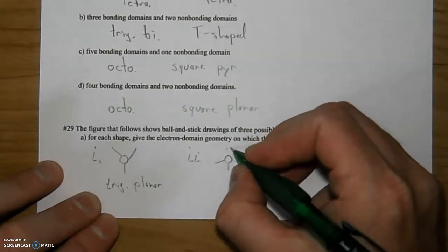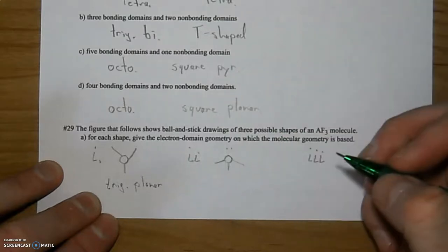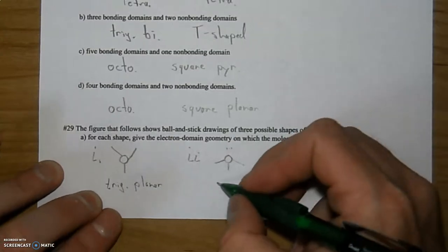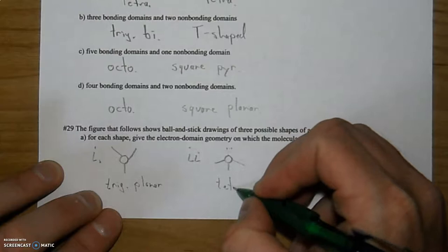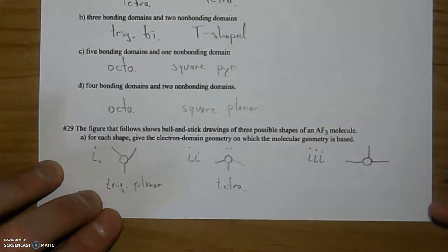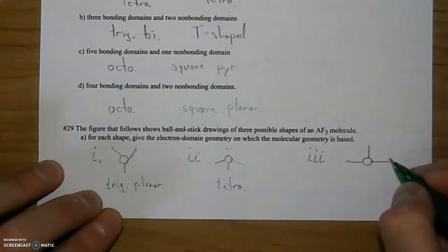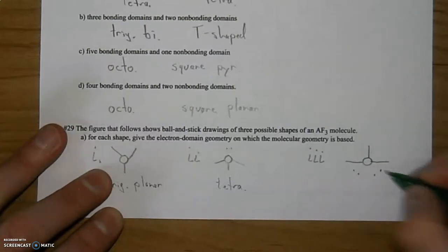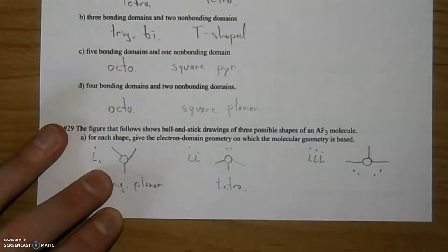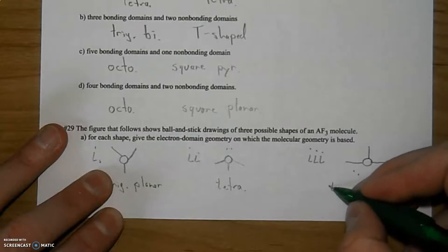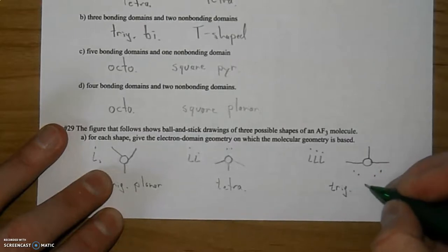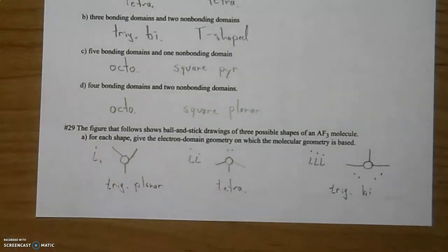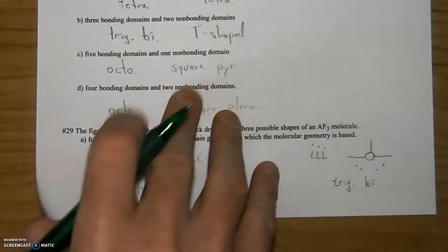This one still has three, but as far as the electron domain geometry, this one here I have three but why are they all facing down? Because there's another pair of electrons hanging out up here, so there's four locations, electron domains. Therefore this one is tetrahedral. And this one has the three in this shape which implies that there are two lone pairs of electrons hanging out over here, so five total. That one will be trigonal bipyramidal.